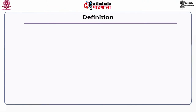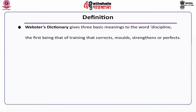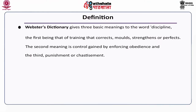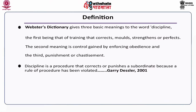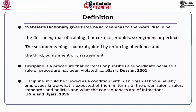According to Webster's dictionary, discipline has three basic meanings: first, training that corrects, molds, strengthens or perfects; second, control gained by enforcing obedience; and third, punishment or chastisement. According to Gary Dessler, discipline is a procedure that corrects or punishes a subordinate because a rule or procedure has been violated. According to Rieu and Bayars, discipline should be viewed as a condition within an organization whereby employees know what is expected of them in terms of the organization's rules, standards and policies, and what the consequences are of infractions.